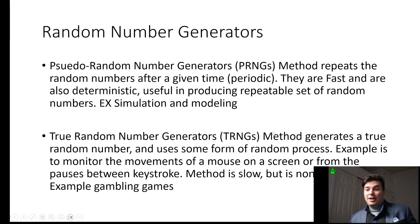While a true random number is a real random process, and for example, it monitors the movements of a mouse on the screen or pauses between the keystrokes. The method is a lot slower, but it's a lot harder to determine what that random number is, and they use this in things such as gambling games.